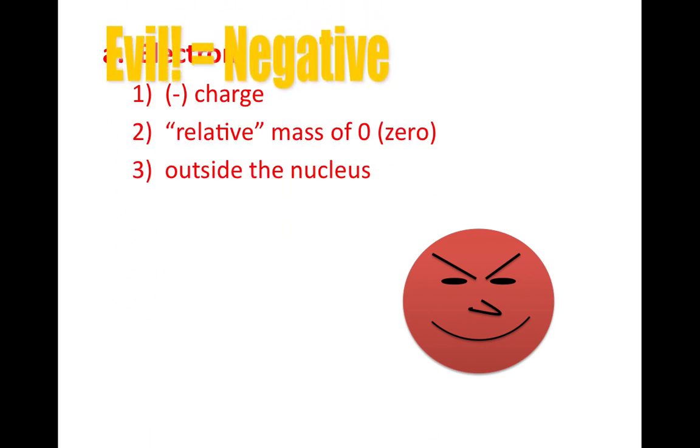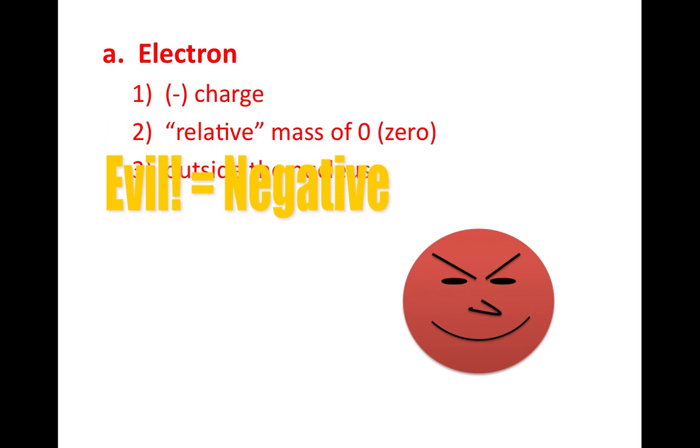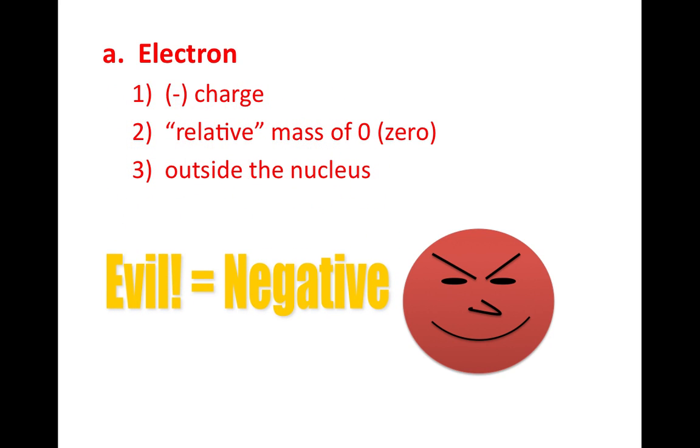Let's move on to my first particle of matter here. We're going to start with my little evil particle. I like to anthropomorphize them to help me remember them. That's my electron. An electron has a negative charge, a relative mass of zero, and it is found outside the nucleus. Relative mass of zero means it does have some mass, because otherwise it wouldn't be matter, but it's so insignificant compared to the mass of the overall atom that we just don't weigh it. And it is the only particle found outside the nucleus. I like to remember them being evil as they're negative in charge.